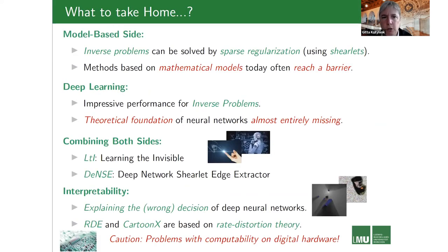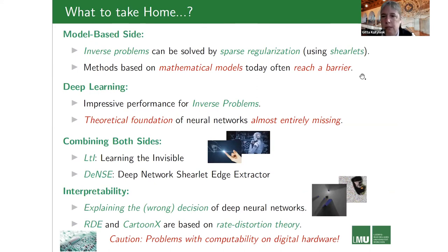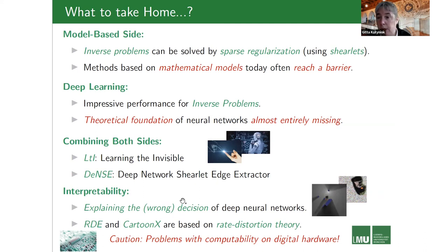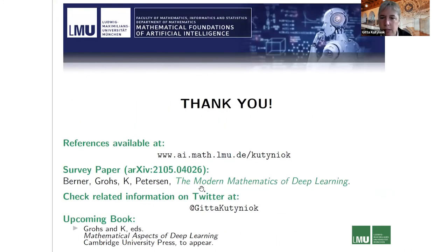In conclusion: we talked about applications of neural networks to inverse problems, where the model-based approach uses sparse regularization. Staying purely on the model-based side may reach a barrier, while deep neural networks are the state of the art for inverse problems — though theoretical foundations are still largely missing. Combining both worlds is advantageous. We also discussed explainability using rate-distortion theory, and computability limitations on digital hardware. Thank you for your attention.